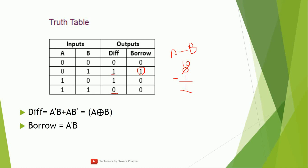Now let us talk about the equations for difference and borrow. For difference, there are two entries where the output is one. We write the expression using SOP (sum of products): A̅·B + A·B̅. If the value of a variable is zero it is represented with a bar; if one, it is a normal variable. The final output simplifies to A XOR B, because this is the relationship of the XOR operation.